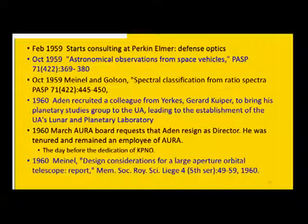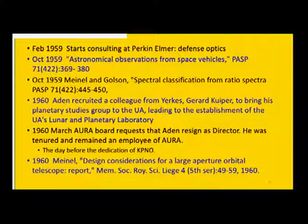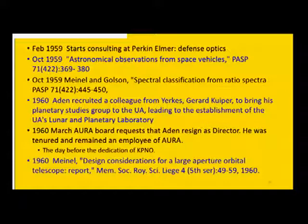A second paper he wrote for the Memoirs of the Royal Society of Liège on design considerations for large aperture orbital telescopes came out in 1960, so he was always thinking about large space telescopes. When he set up the Kitt Peak National Observatory, he had a solar division and a space division. Unfortunately, the National Science Foundation and NASA got into a big charter war: it turns out the NSF cannot do space science research — that has to be paid for by NASA. As a result, the space division eventually atrophied after about ten years, though they did some excellent work in rockets at Kitt Peak launching UV spectra.